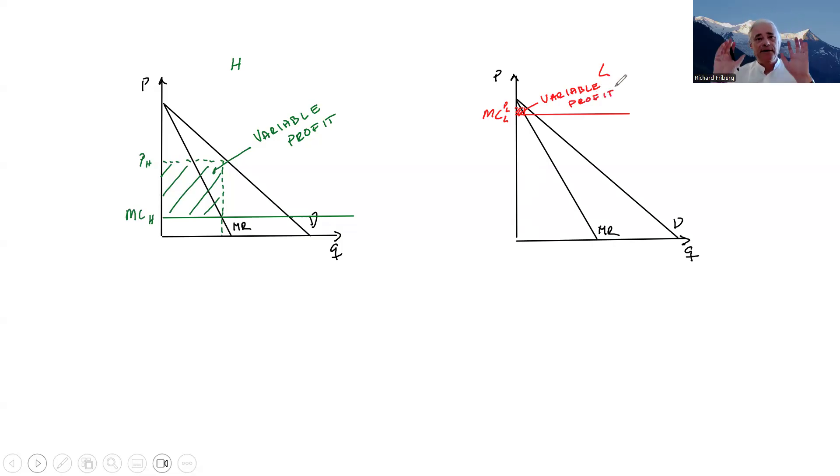So here we have the heterogeneity part very clearly. We have one firm that produces higher quantities, has lower prices, and higher variable profits than its compatriot here. Now, the question is how can we reconcile this with free entry?